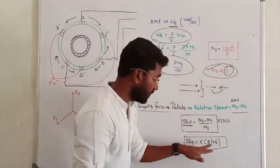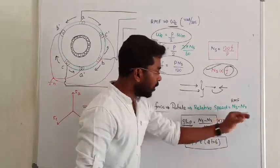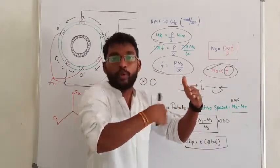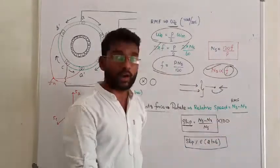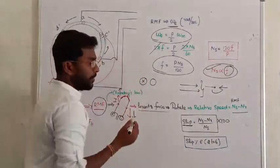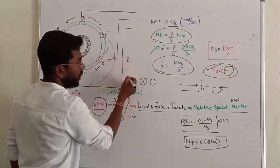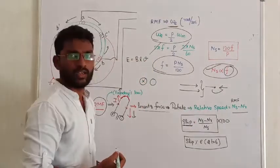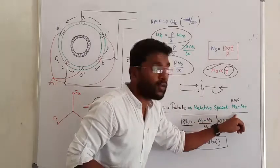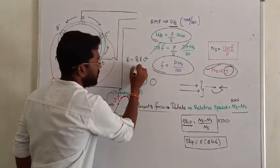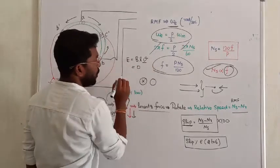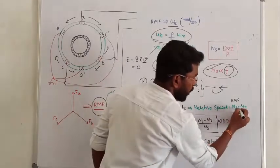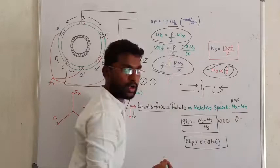The rotor speed and synchronous speed cannot become equal. The formula for dynamically induced EMF involves B·L·v, where v is the relative velocity. Suppose synchronous speed equals rotor speed — then relative velocity becomes zero. If relative velocity is zero, the induced EMF becomes zero, meaning no current flows, no torque is developed, and the rotor cannot maintain that speed.